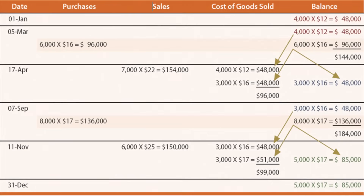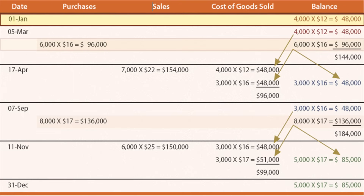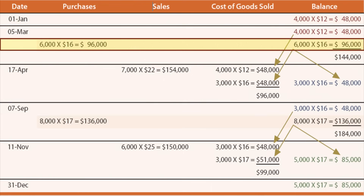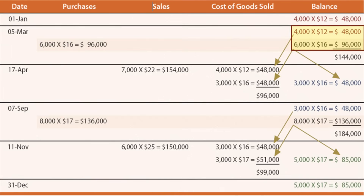Here's an example — a carryover of the Gonzales Chemical Company from previous illustrations, now on a perpetual FIFO basis. On January 1, we started with 4,000 units at a unit cost of $12 each. On March 5, we bought 6,000 units at $16 for a total cost of $96,000. So what we have in inventory at that moment is 10,000 units: 4,000 carrying a unit cost of $12, and 6,000 carrying a unit cost of $16.